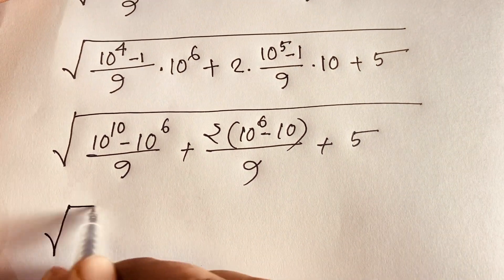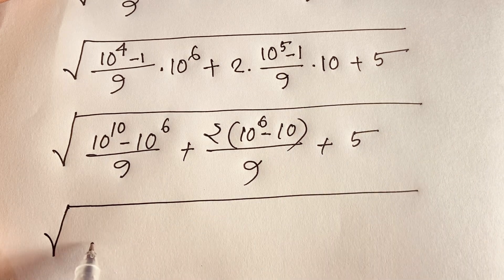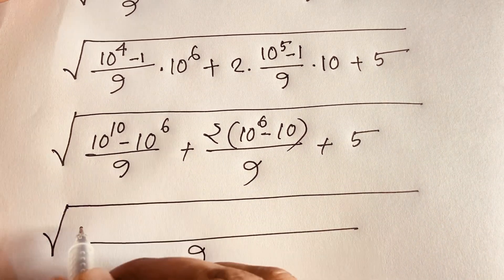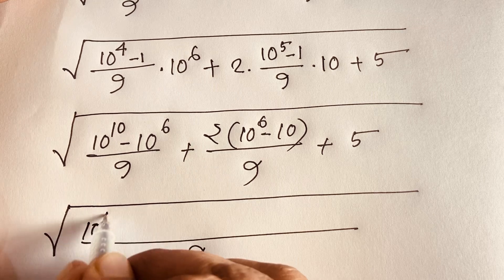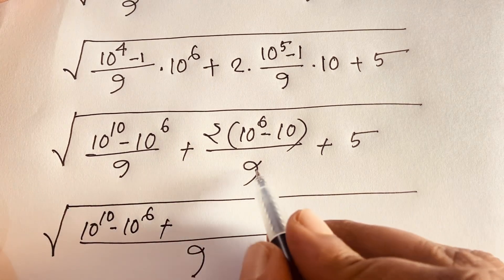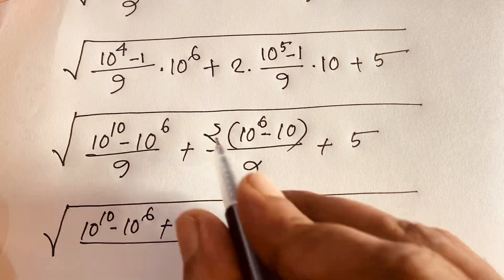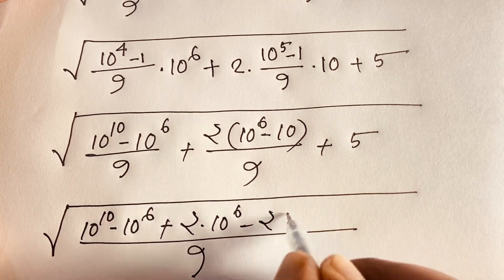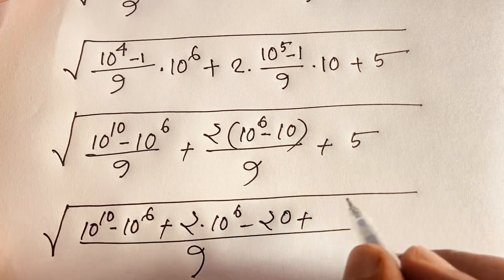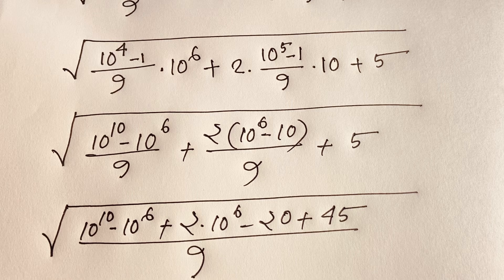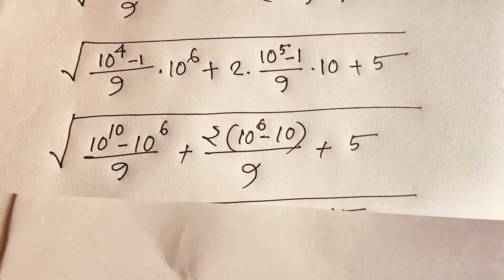Now using the least common value of 9, you can see this: it will be 10 to the power 10 minus 10 to the power 6, plus — combining these terms — 2 times 10 to the power 6 minus 20, and 9 times 4 is 36 and 9 times 5 is 45. So we get 45 as a combined constant term.